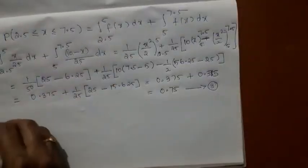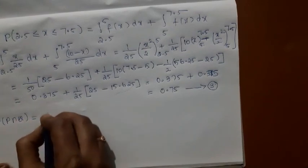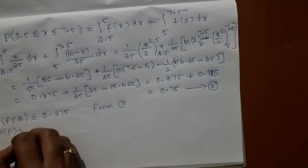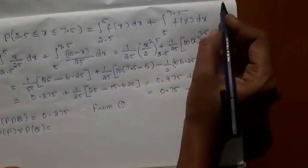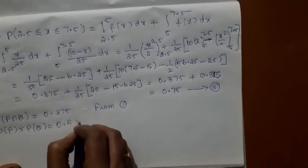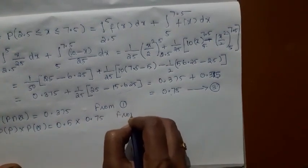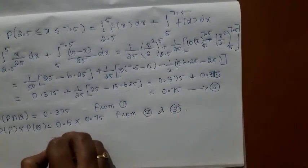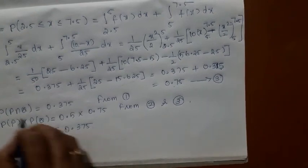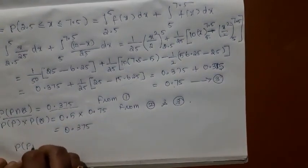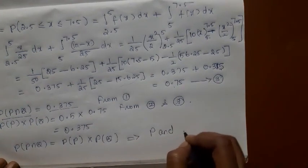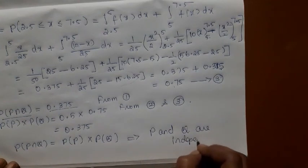Now let us conclude. Probability of P∩Q = 0.375. Probability of P × probability of Q = 0.5 × 0.75 = 0.375. Since probability of P∩Q equals probability of P times probability of Q, we conclude that P and Q are independent.